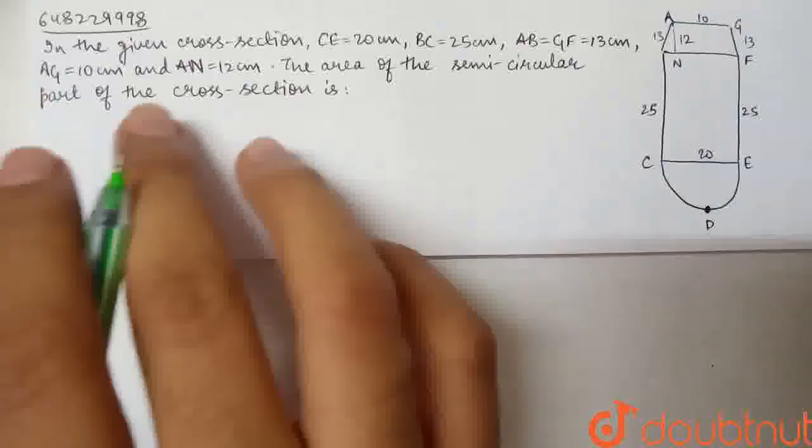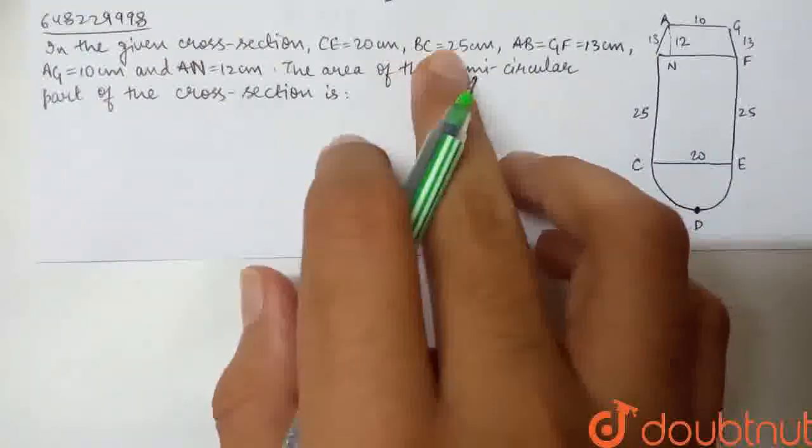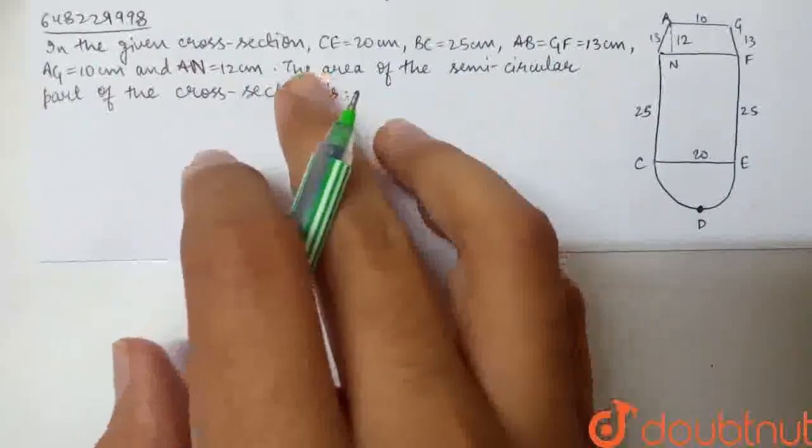This question says, in the given cross section, CE is 20 cm. This is 20. BC, AB, GF, AG, and AN - all these lengths are given.